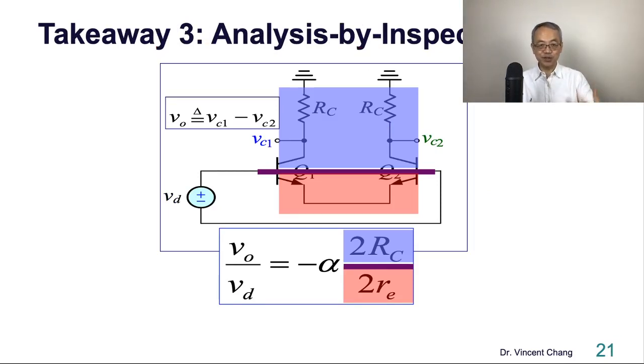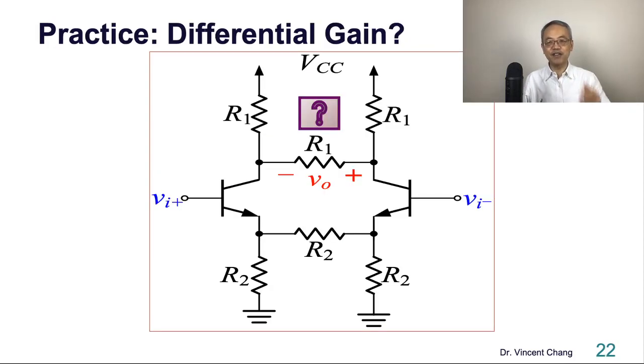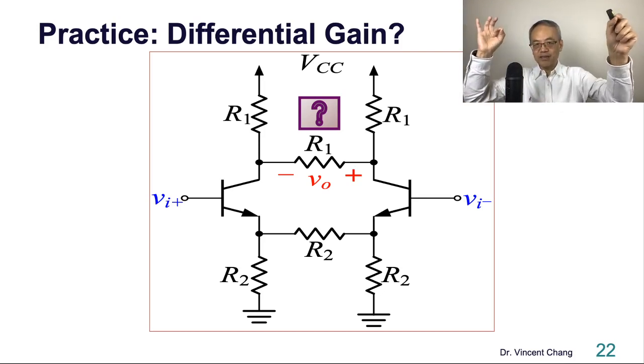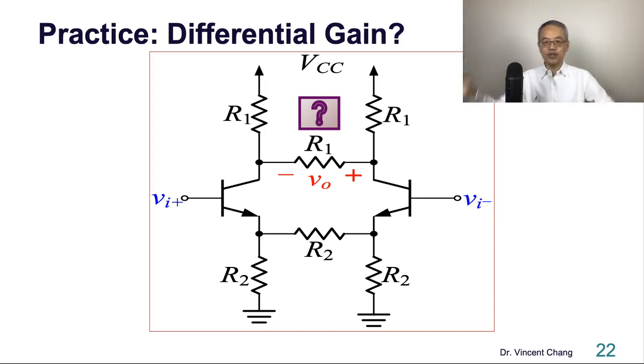To boost your confidence, I give you homework. You just put it down this. Practice differential gain. Now it's defined as right minus left. So differential out, right minus left, divided by differential in. What will be the answer? Analysis by inspection. Use the skill I just taught you. Analysis by inspection and solve this within one minute.